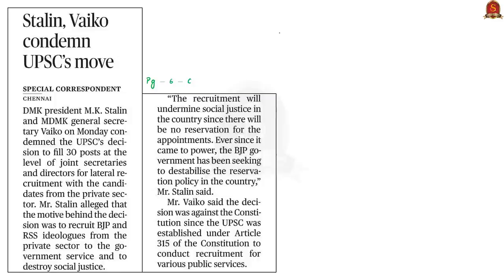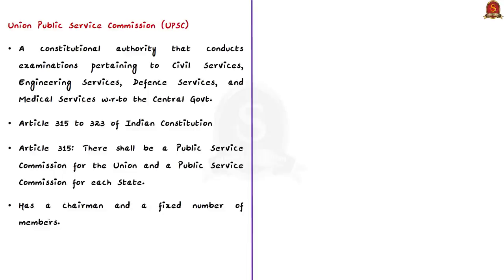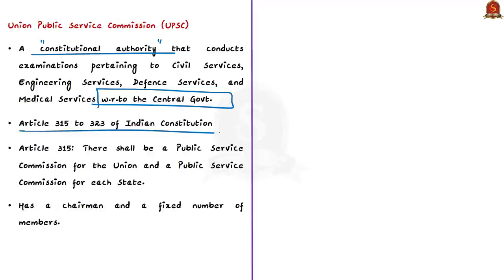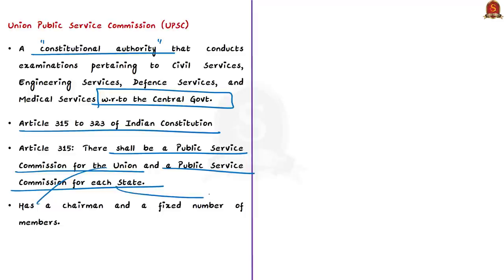This news article talks about some political parties in Tamil Nadu which condemned the UPSC's decision to fill some posts at the level of joint secretaries and directors for lateral recruitment with candidates from the private sector. Union Public Service Commission is a constitutional authority that conducts exams pertaining to civil services, engineering services, defense services and medical services, as well as economic service, statistical service and police forces examinations. Articles 315 to 323 of the Indian Constitution deal with UPSC. According to Article 315, there shall be a public service commission for the union and a public service commission for each state. UPSC has a chairman and a fixed number of members whose terms and conditions of service are determined by the President of India. The commission usually consists of 9 to 11 members including the chairman, appointed by the president for a period of 6 years.